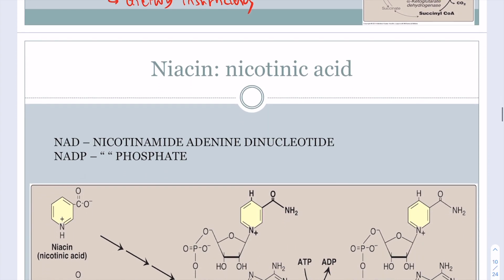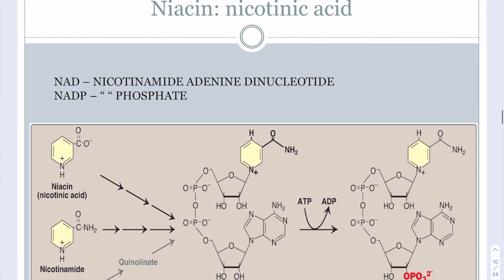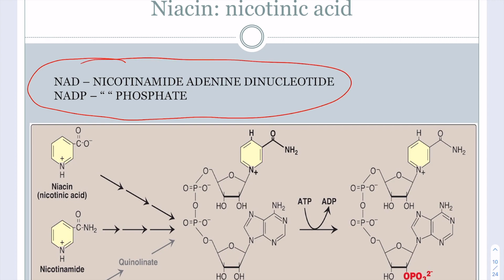Next up is Niacin. Niacin is nicotinic acid and generates two critical cofactors: NAD and NADP. In your diet, nicotinic acid will first generate NAD, and then a phosphate is transferred to the 2-position to get NADP. One important point is that tryptophan can compensate for Niacin to make NAD.